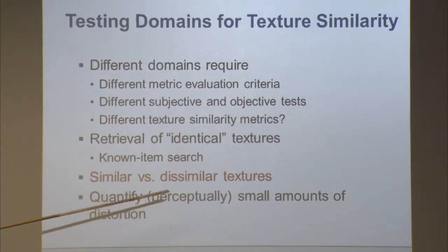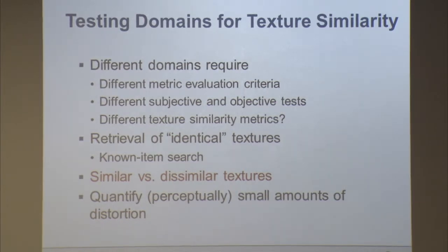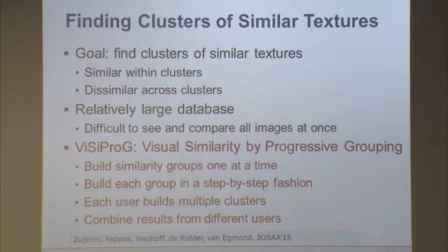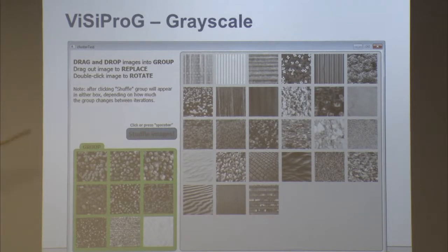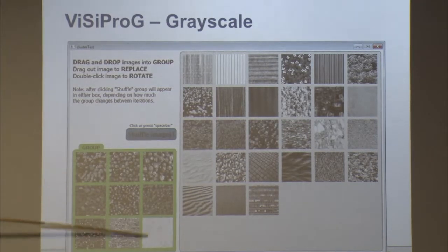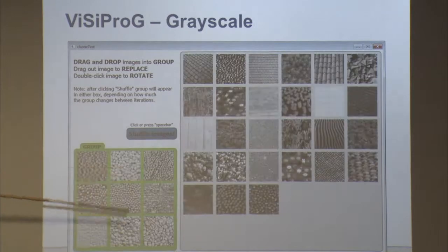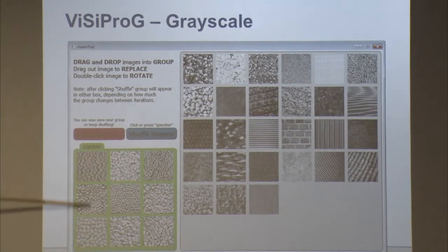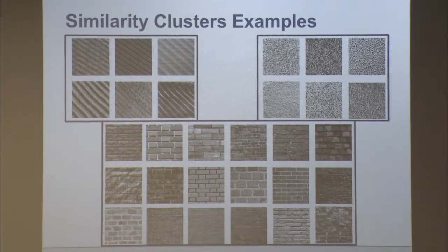For similar versus dissimilar testing, you need to construct groups of similar textures. If the metric gives high values within a group and low values across groups, you have a successful metric. We devised a new procedure: given many textures, people are shown textures gradually and asked to form groups. They refine the groups as more textures are shown, and eventually converge on uniform groups. Combining multiple sessions gives similarity groups — a very useful tool for understanding texture similarity.